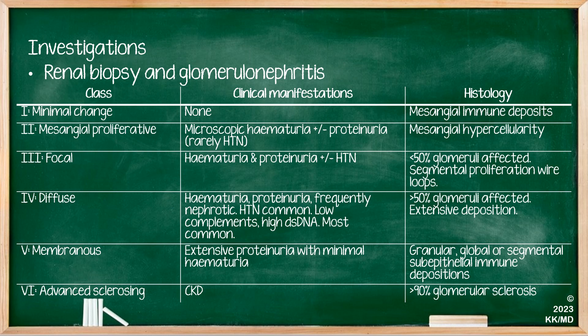In category one, you get minimal change disease. The patient is really quite asymptomatic at this stage, but on kidney biopsy you will see mesangial immune deposits. Category two is mesangial proliferative, where you get microscopic haematuria plus or minus proteinuria, and you rarely have hypertension. On biopsy, you will see mesangial hypercellularity.